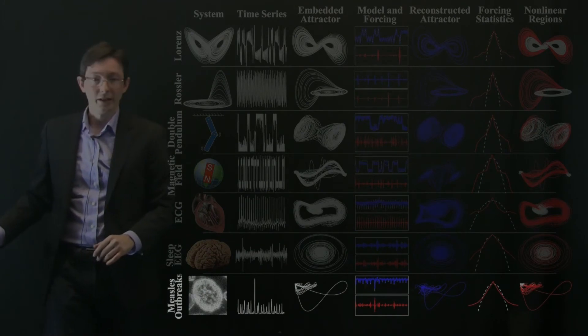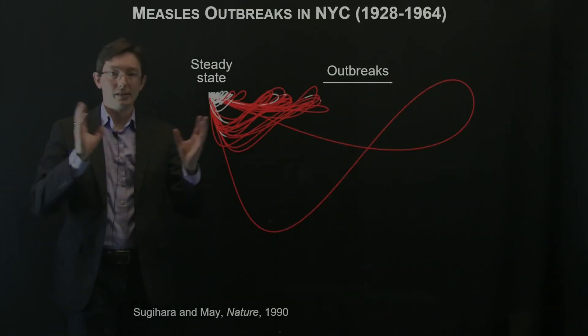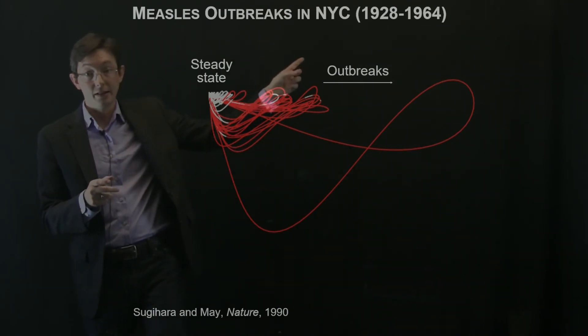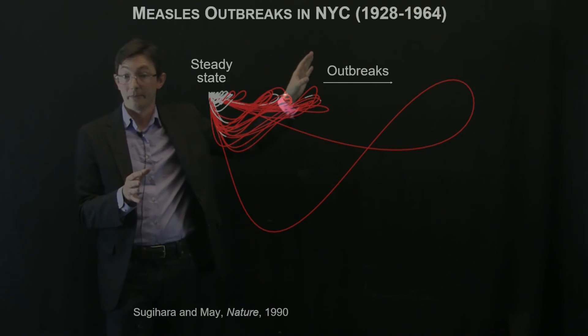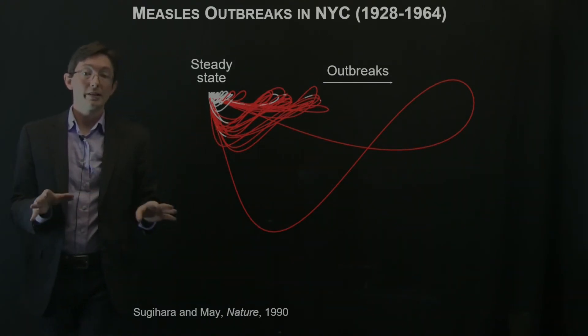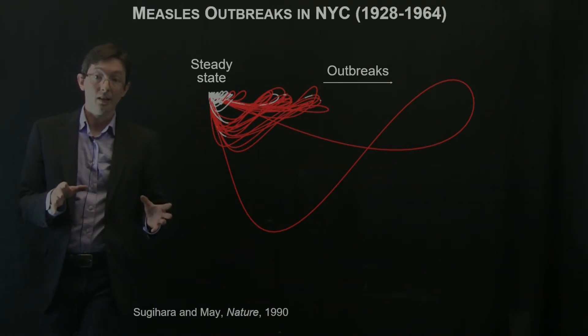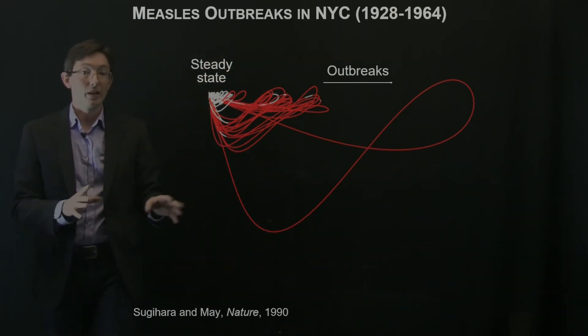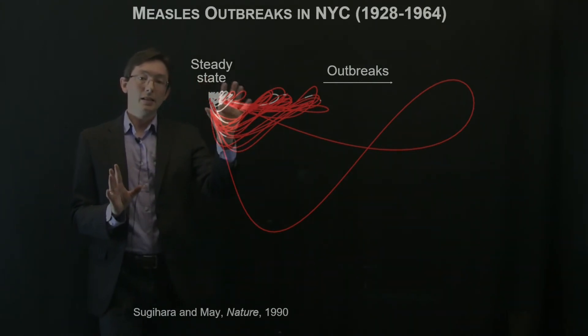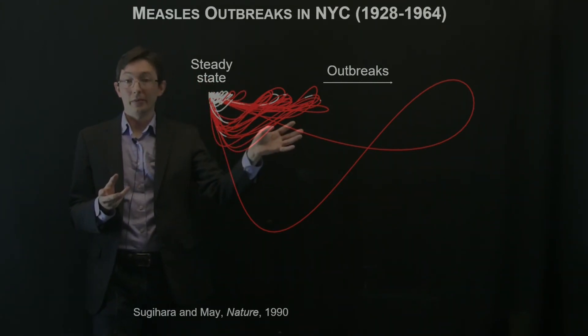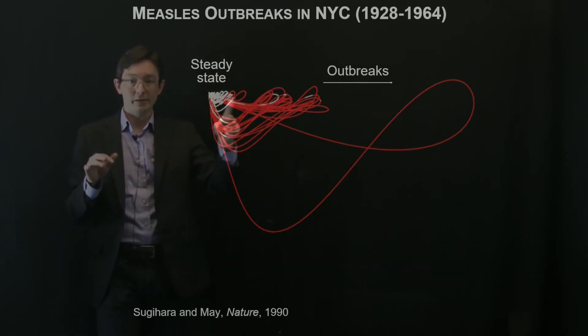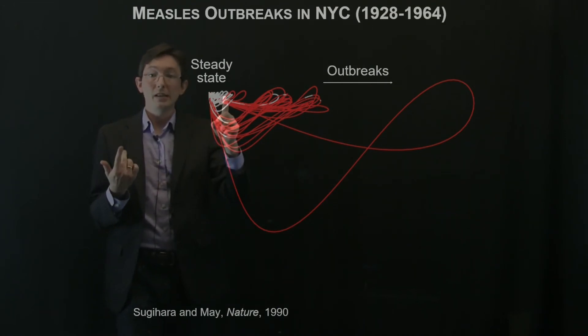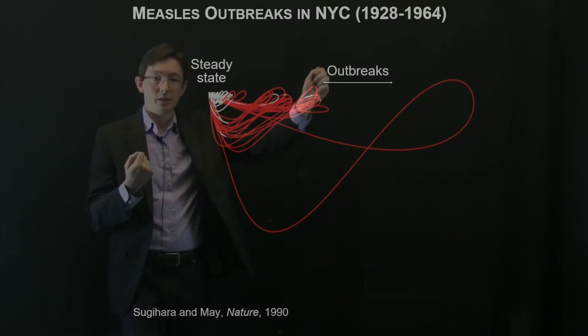So now let's look at the measles outbreak data. This is a really neat data set. This is actual occurrences of measles outbreaks binned every two weeks from 1928 to 1964 in New York City. And this is actually a data set that's been well studied in the context of time delay embedding. So Sugihara and May have studied this in their seminal paper and many since. And this is what the data looks like in our eigentime delay coordinates. So the steady state where there's no measles corresponds to the origin.